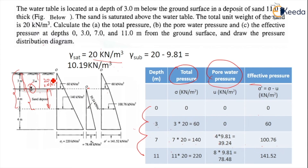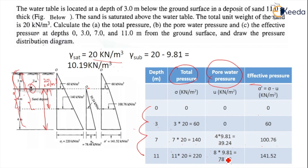At the 11 meter level: total stress = 11 × 20 = 220 kN per meter square. Pore water pressure depth from water table = 4 + 4 = 8 meters. U = 8 × 9.81 = 78.48 kN per meter square. Effective stress = 220 minus 78.48 = 141.52 kN per meter square.